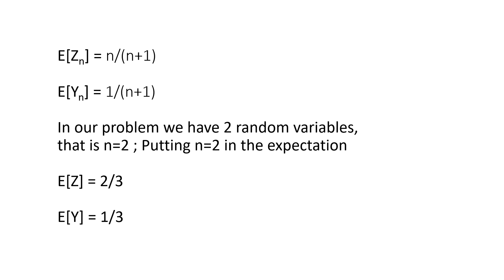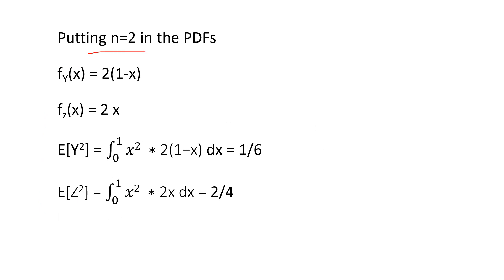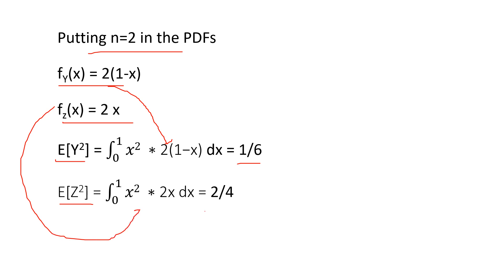For our question, n = 2. Substituting, E[Z] = 2/3 and E[Y] = 1/3. The PDF of y is 2(1−x) and the PDF of z is 2x. Computing E[Y²] = ∫x²·2(1−x)dx from 0 to 1 gives 1/6, and E[Z²] = ∫x²·2x dx from 0 to 1 gives 1/2.